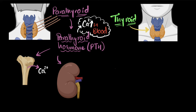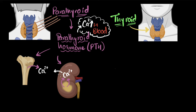What does it do in the kidneys? Well, in the kidneys, what it does is that it asks the cells of the kidneys to reabsorb calcium from the urine. And once it reabsorbs it, the kidney puts it back into the bloodstream. Again, calcium levels in the blood have increased.